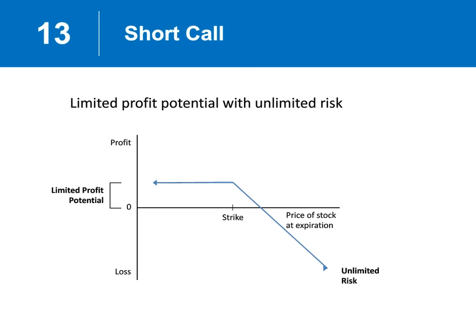Short call. A very different blue line on the slide. Where the long put gave us significant — in theory unlimited — profits to the downside, the short call's profit line goes horizontal. That's because, as with any option we sell, we can only make as much as we sold the option for. So you sell that call for $1, $3, or $10 — that's the most you can make. A big, big difference between long put versus short call.